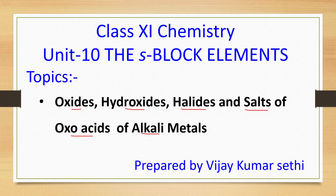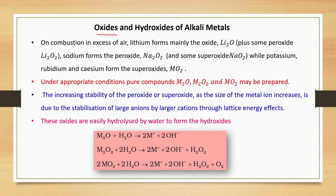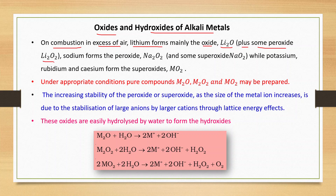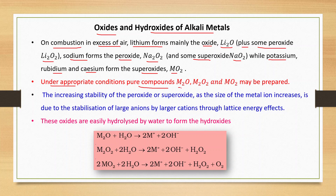First, oxides and hydroxides of alkali metals. On combustion in excess of air, lithium forms mainly the oxide Li₂O plus some peroxide Li₂O₂. Sodium forms the peroxide Na₂O₂ and some superoxide NaO₂, while potassium, rubidium, and cesium form the superoxides of formula MO₂. Under appropriate conditions, all compounds — monoxide, peroxide, and superoxide — may be prepared.